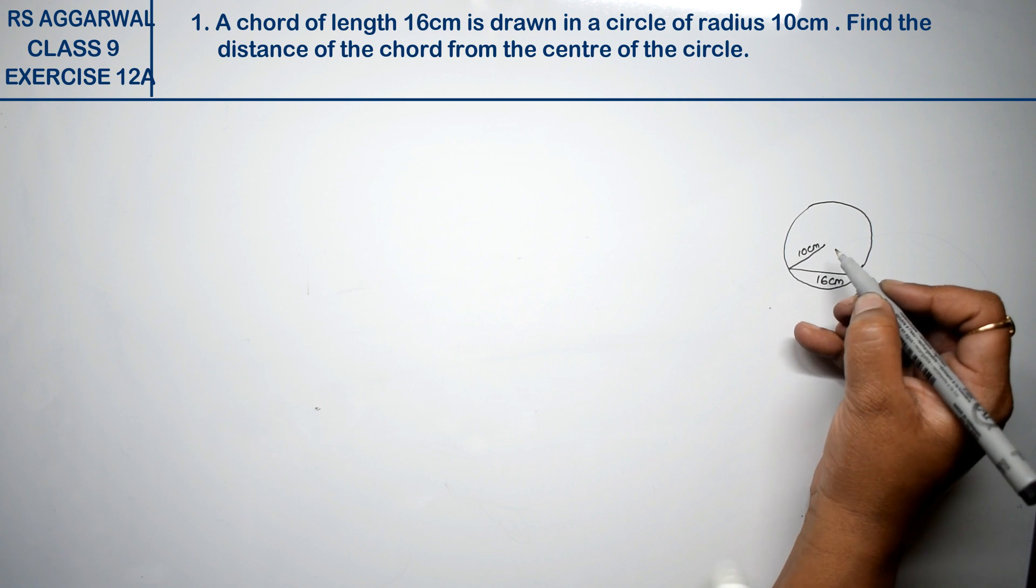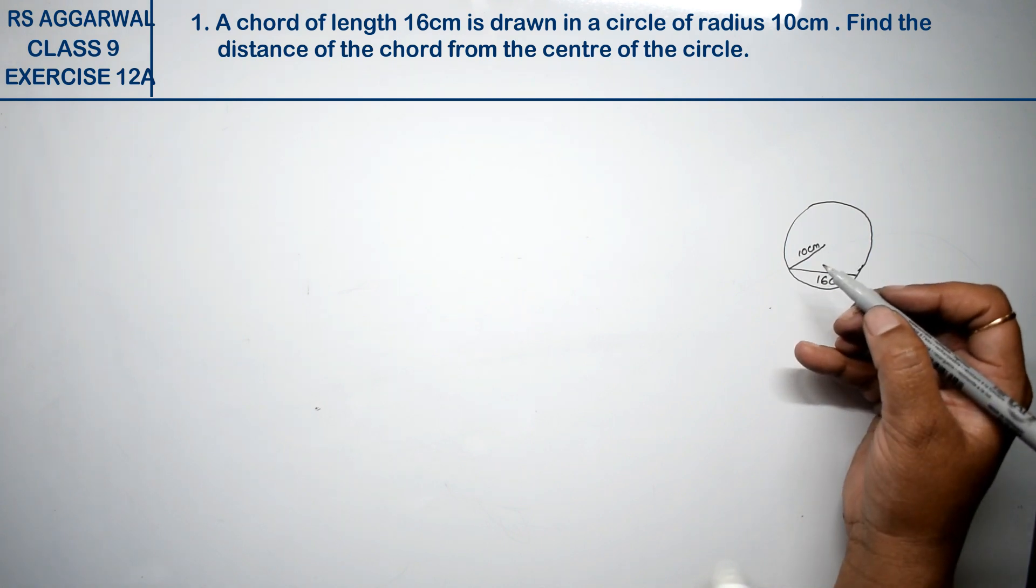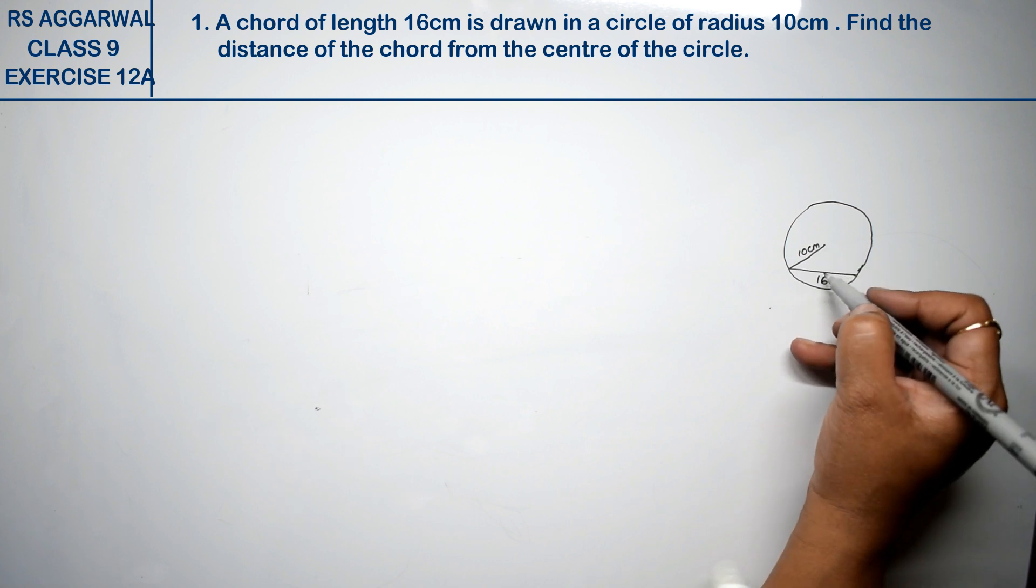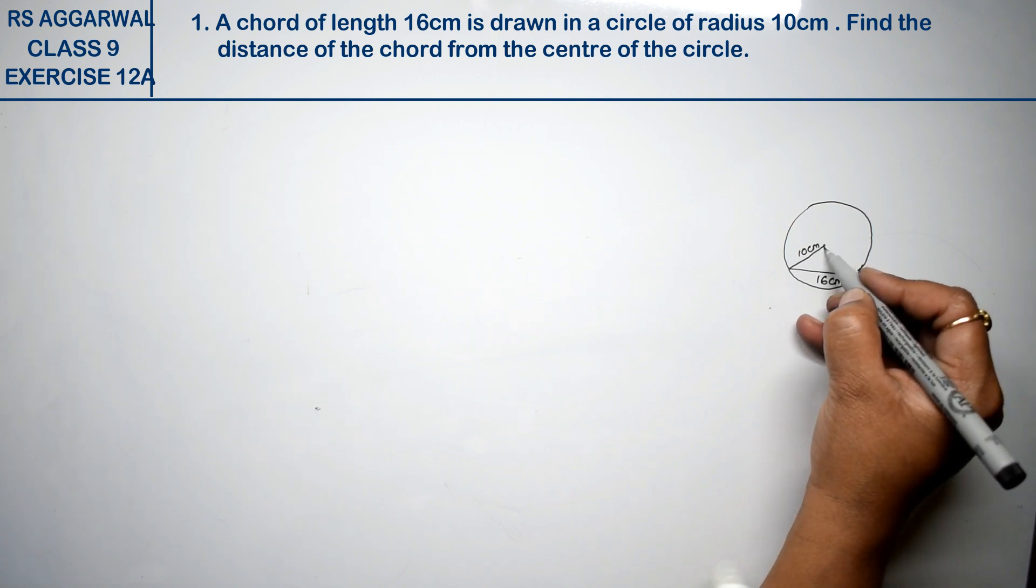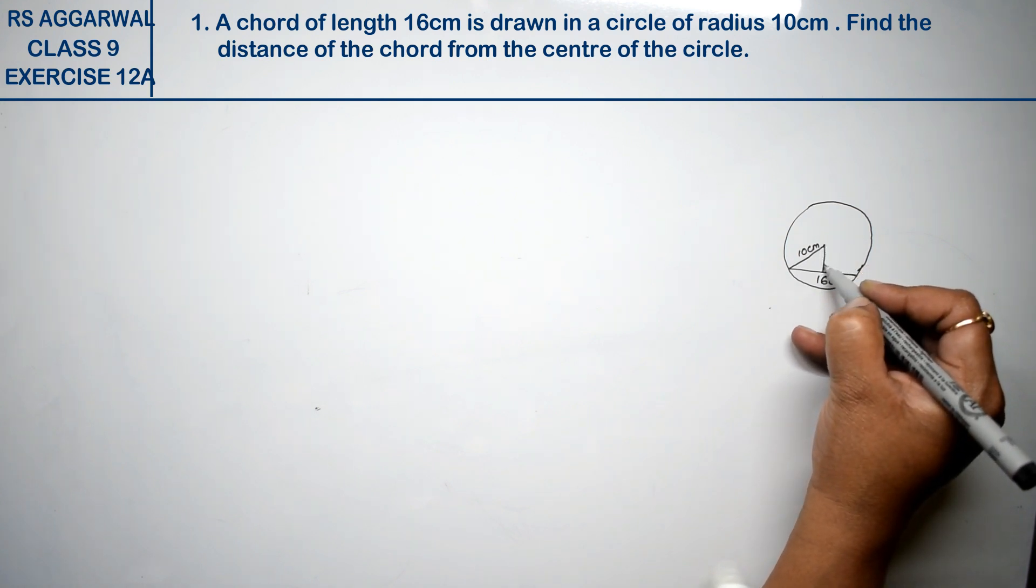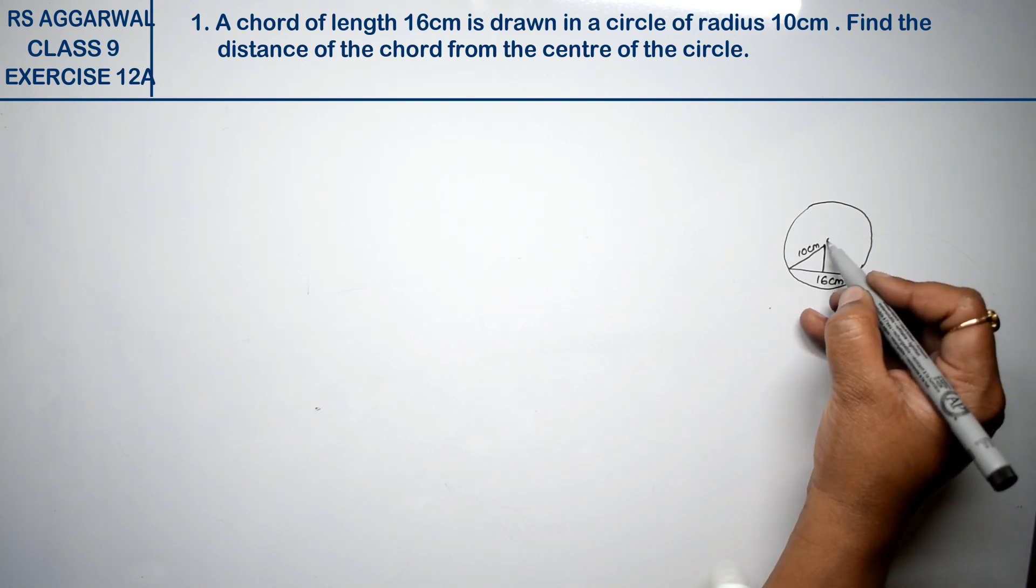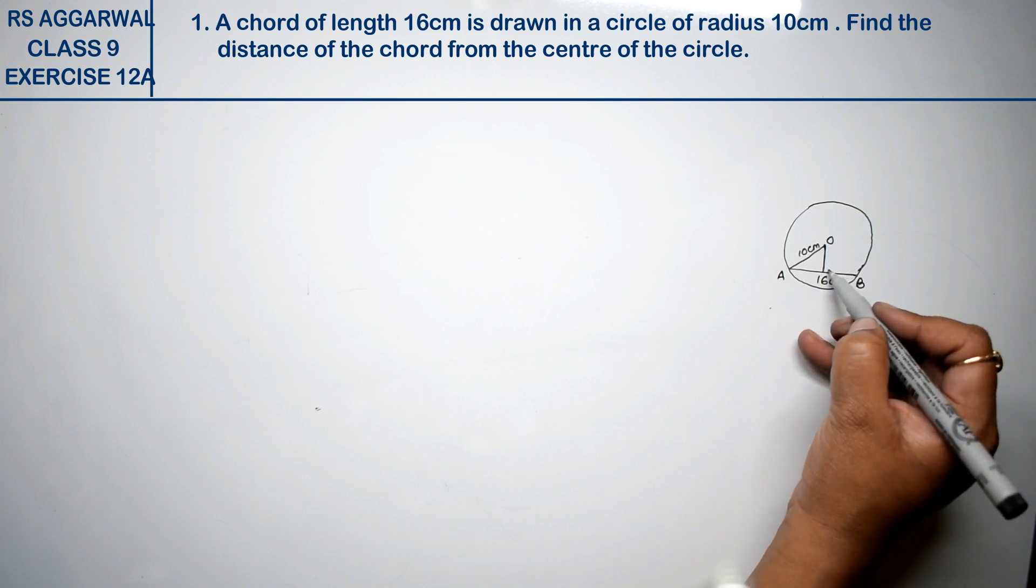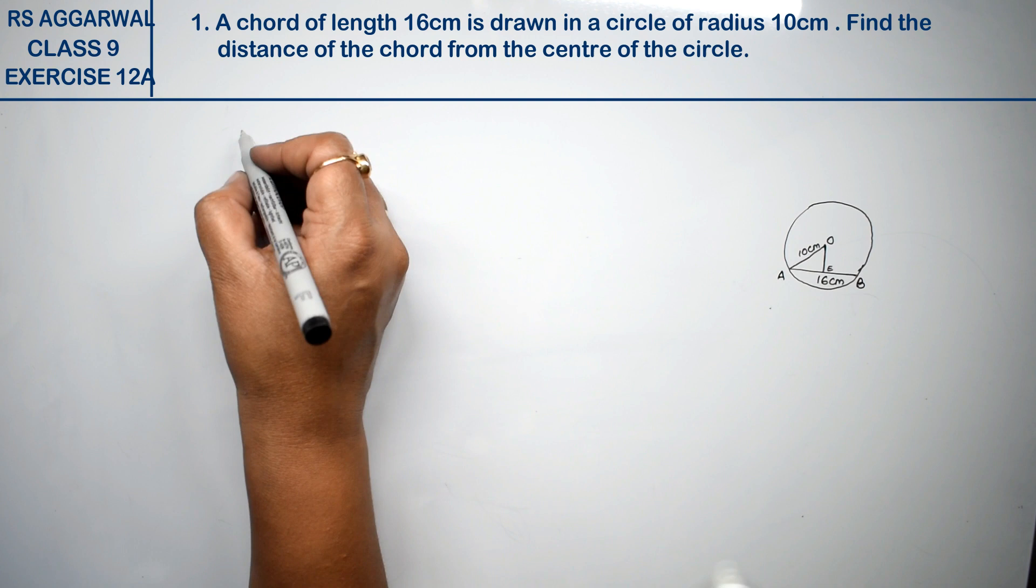Find the distance of the chord from the center of the circle. The chord distance from the center of the circle, we have this distance, we have this line. If it is O and chord AB, we have this point E, so we have this point.